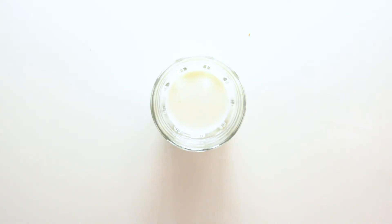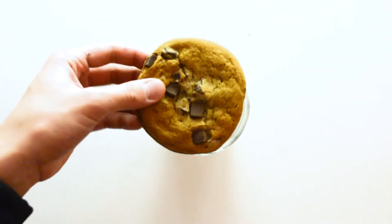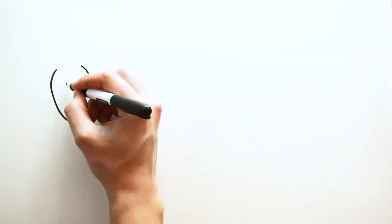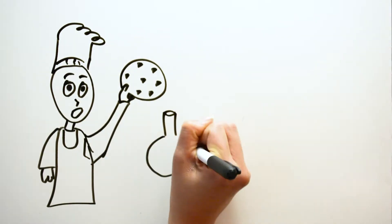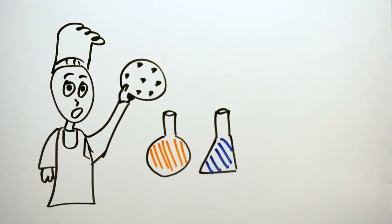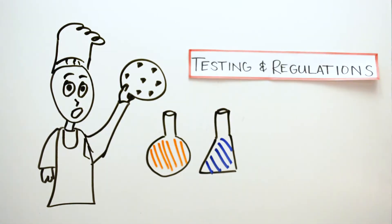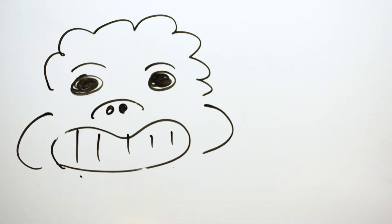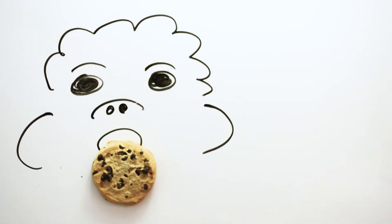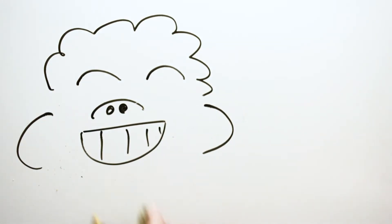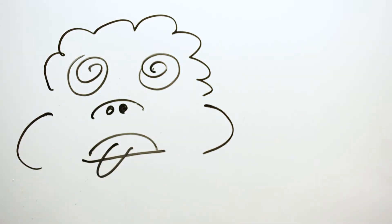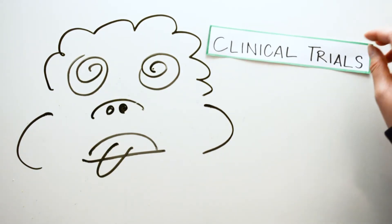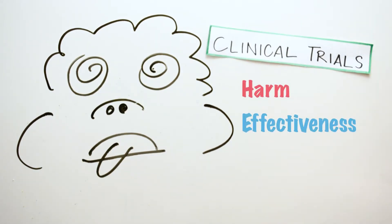Thanks, Megan. So, what are the barriers that she's talking about? Imagine the chef was actually a scientist, and the cookies were a new discovery or innovation. One of the barriers you'll encounter is testing and regulations. You'll have to find out if people actually like your cookie, or if your cookie makes people sick. This is similar to how scientists conduct clinical trials, testing for harm and effectiveness.